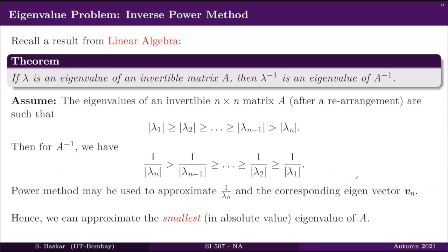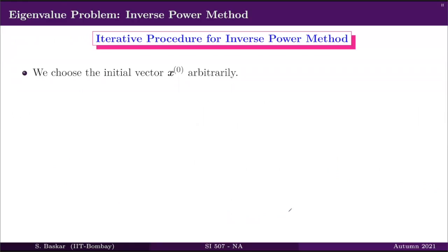Using the inverse power method, we can approximate the smallest eigenvalue of A. Let us now give the iterative procedure. As a first step, you choose a vector x_0 arbitrarily. For the method to be implemented, it can be chosen arbitrarily, though theoretically we need more hypotheses for convergence to the dominant eigenvalue. For every k = 0, 1, 2, ..., we generate two sequences: a sequence of real numbers and a sequence of vectors.